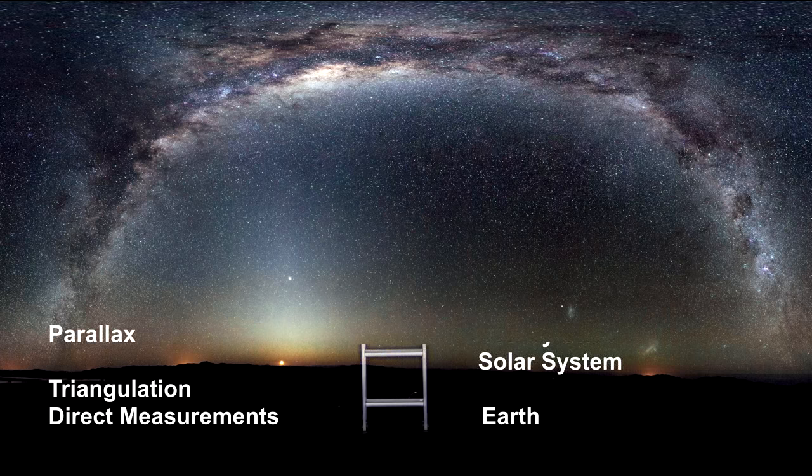Here's an overview of the rest of the ladder. Parallax is the second rung in the ladder. Direct measurement doesn't work for figuring out how far away the Sun is. For that, you use an extension of triangulation called parallax.